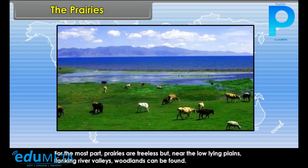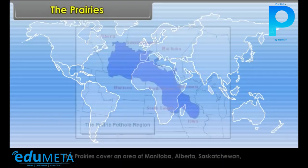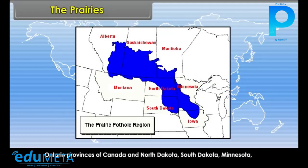But near the low-lying plains flanking river valleys, woodlands can be found. They extend from the Rocky Mountains in the west to the Great Lakes and Appalachian Highlands in the east. The Prairies cover an area of Manitoba, Alberta, Saskatchewan, Ontario Provinces of Canada and North Dakota,